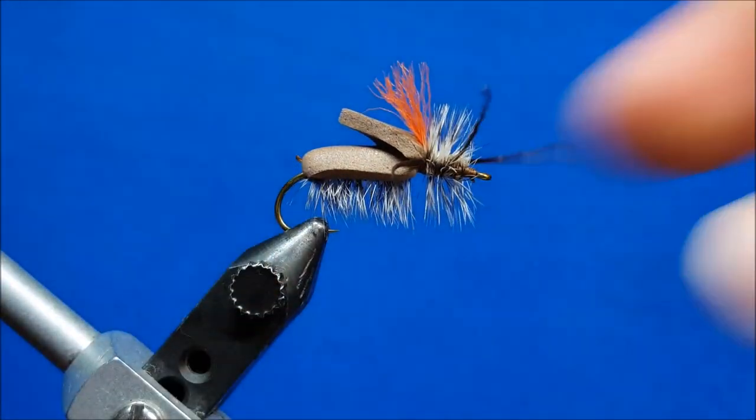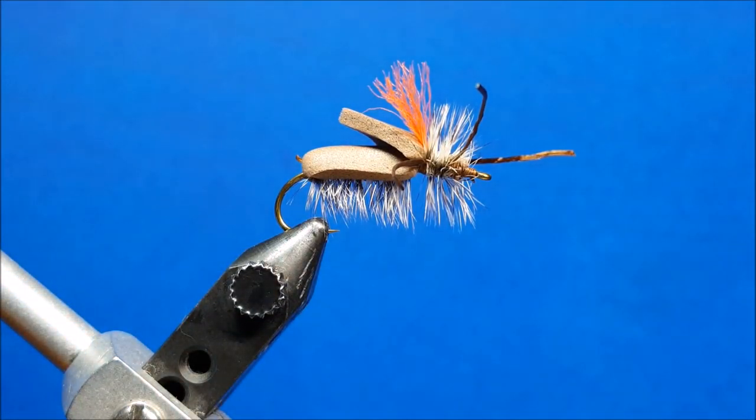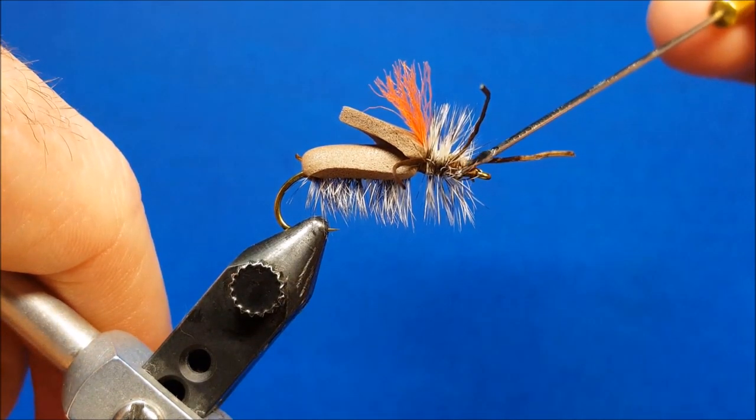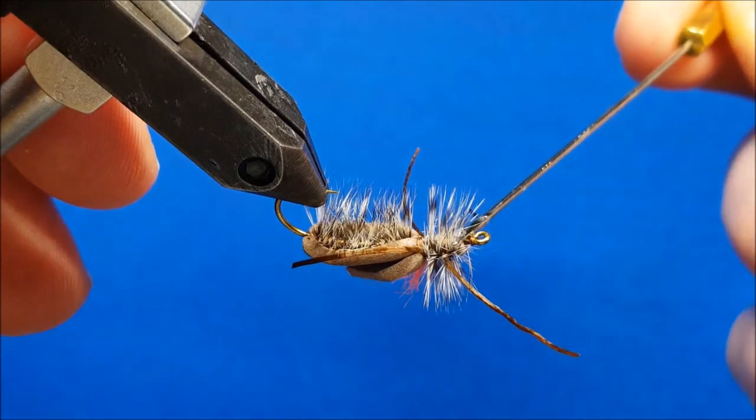Then I'll come in and whip finish this by hand. Cinch it down, snip it off. And then for the sake of durability, I'm going to come in and hit that with just a little bit of Zap-a-Gap on the front. Seal down those wraps, top and bottom.